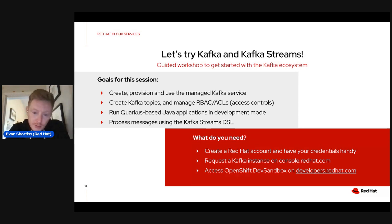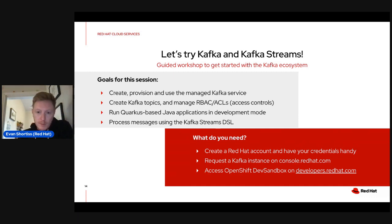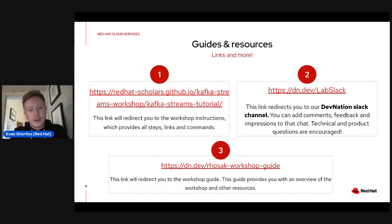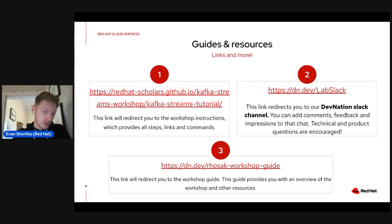What you'll need is a Red Hat account — the workshop will guide you through creating one if you don't have one. You'll go to console.redhat.com and create a Kafka instance, then access the OpenShift Developer Sandbox and a hosted online IDE to deploy and modify these applications in real time. The most important thing is to get to the first link — the actual workshop content — and follow the instructions.